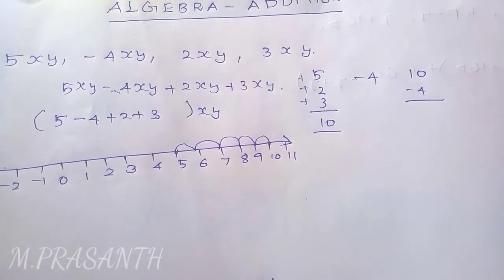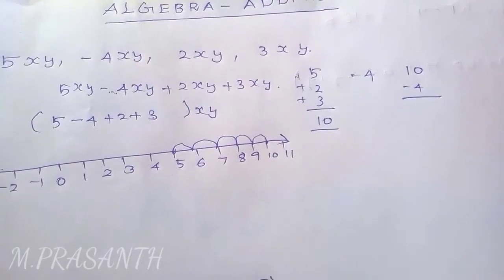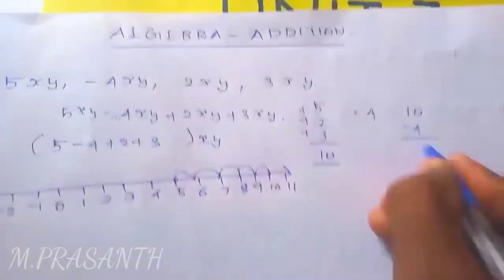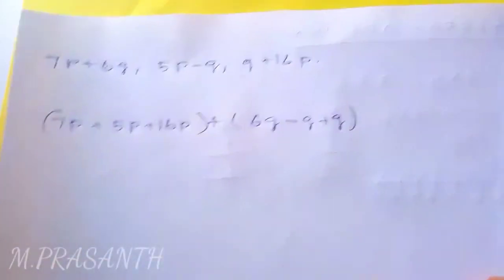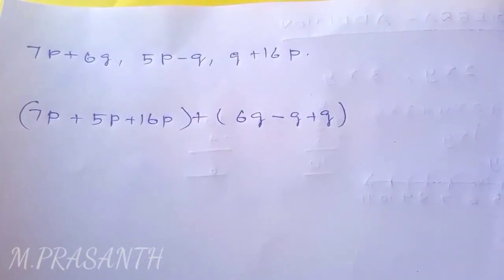Put the number 10 and minus 4, we get 6. So the answer is 6xy. Another example: 7p plus 6q, 5p minus q, q plus 16p.